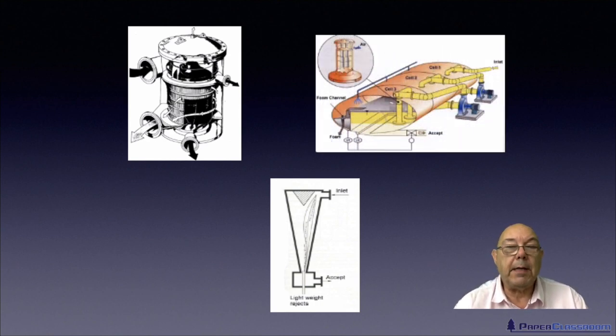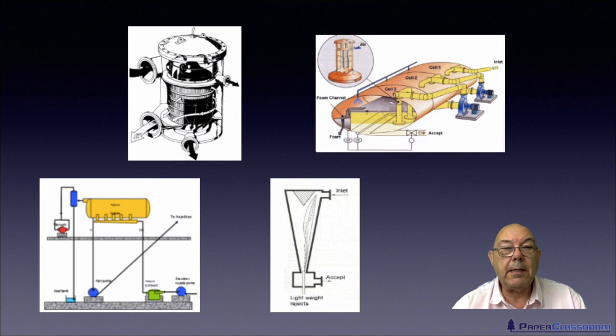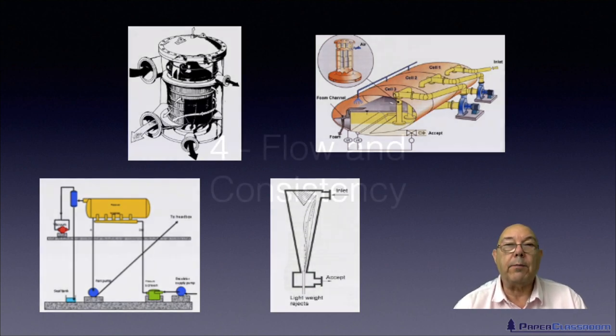The tiniest of all contamination, of course, is ink particles. So we'll have a look at the deinking process and the deinking cells. And one of my particular hobby horses is air in stock. So we'll look at the deculator and the ways of removing air from stock. When we did water and chemical additives, we talked about chemical ways of removing air from stock: antifoams and defoamers. The deculator is a mechanical way of removing air from stock.